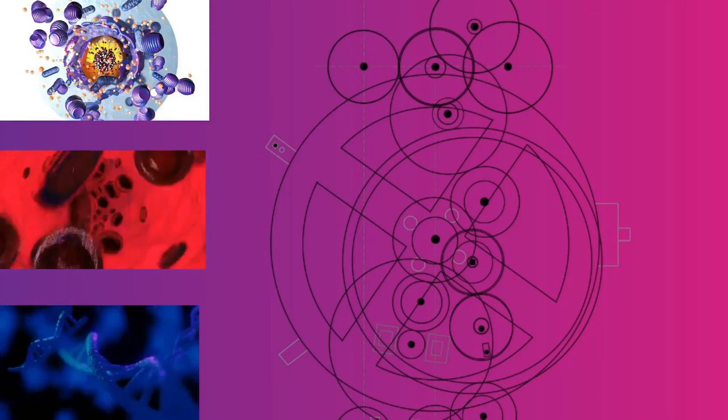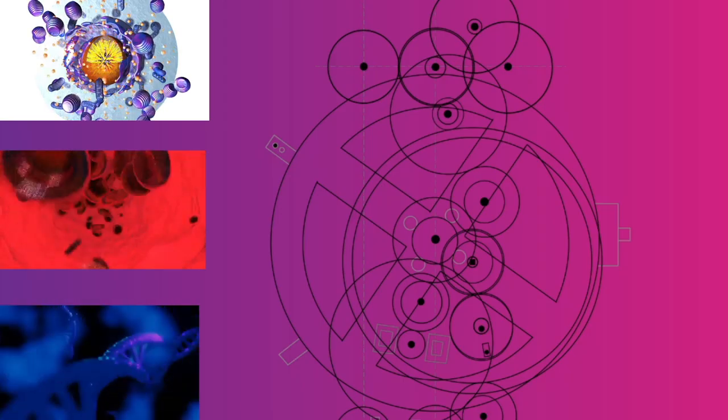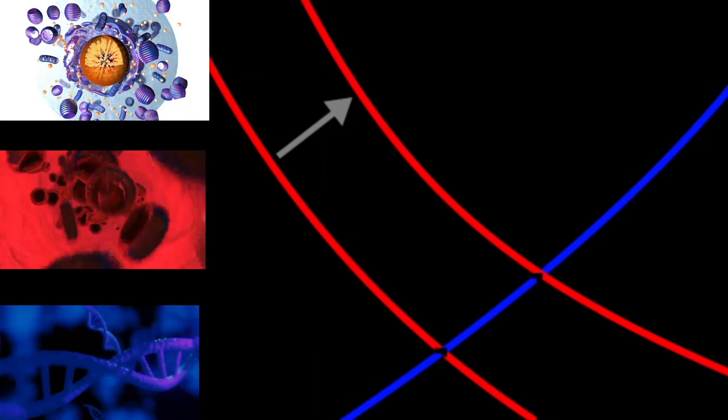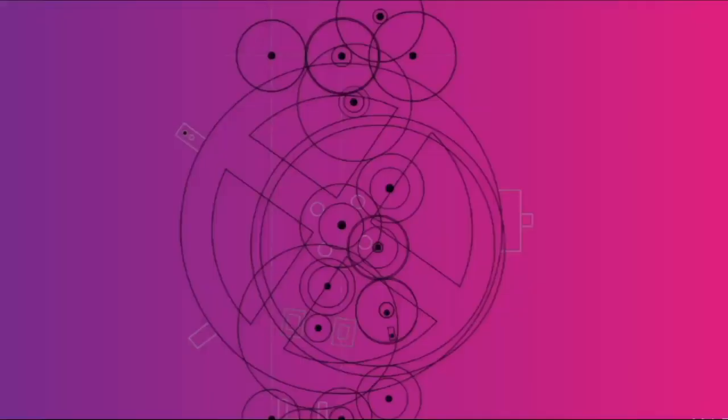Anaphase 1: kinetochore microtubules shorten, pulling homologous chromosomes — each consisting of a pair of sister chromatids — to opposite poles. Non-kinetochore microtubules lengthen, pushing the centrosomes farther apart; the cell elongates in preparation for division. Unlike in mitosis, only the cohesin from the chromosome arms is degraded, while the cohesin surrounding the centromere remains protected by a protein named Shugoshin (Japanese for 'guardian spirit'), which prevents the sister chromatids from separating, allowing them to remain together while homologues are segregated.